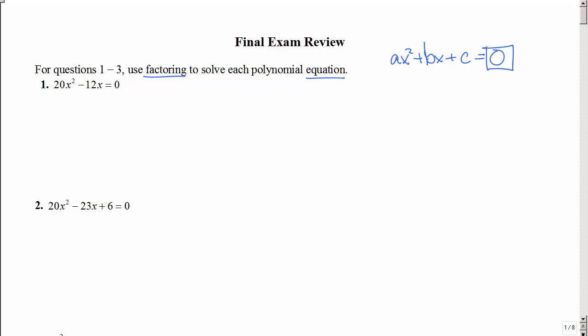But the important thing for this equation is that it must equal zero. As I look at number one and I think about my types of factoring, I want to think about a greatest common factor. What are those both divisible by? 4x.